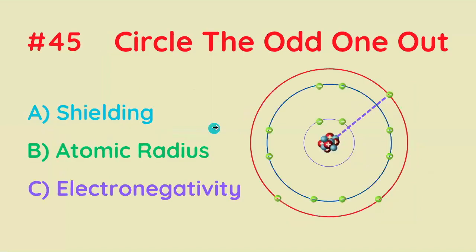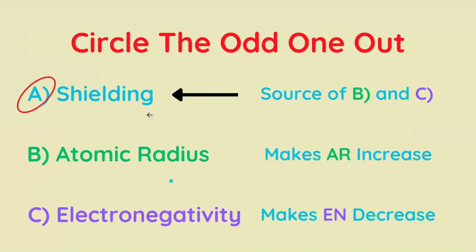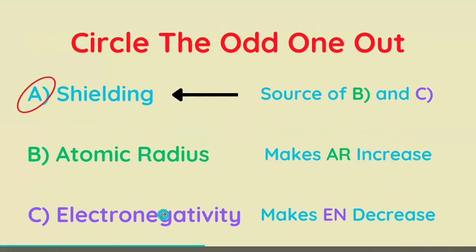Circle the odd term out: shielding, atomic radius, and electronegativity. The correct answer is shielding, because atomic radius and electronegativity are the effect of shielding.